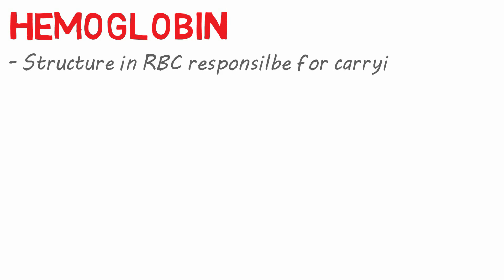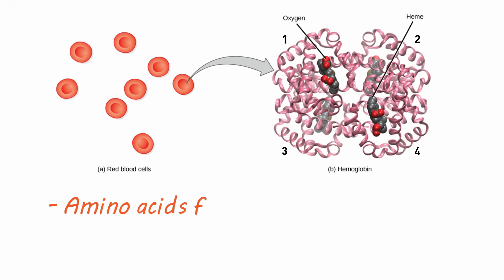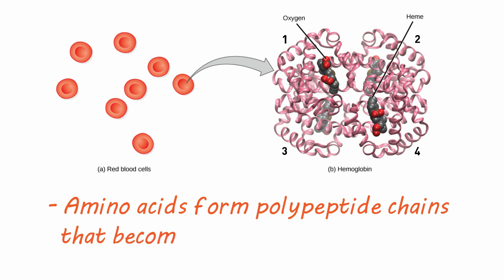Hemoglobin is a great example of this. Hemoglobin is the structure in red blood cells responsible for carrying oxygen to the cells. It is made of four globin protein subunits, each with an iron-containing heme group. In other words, amino acids form polypeptide chains that can become complex very quickly.